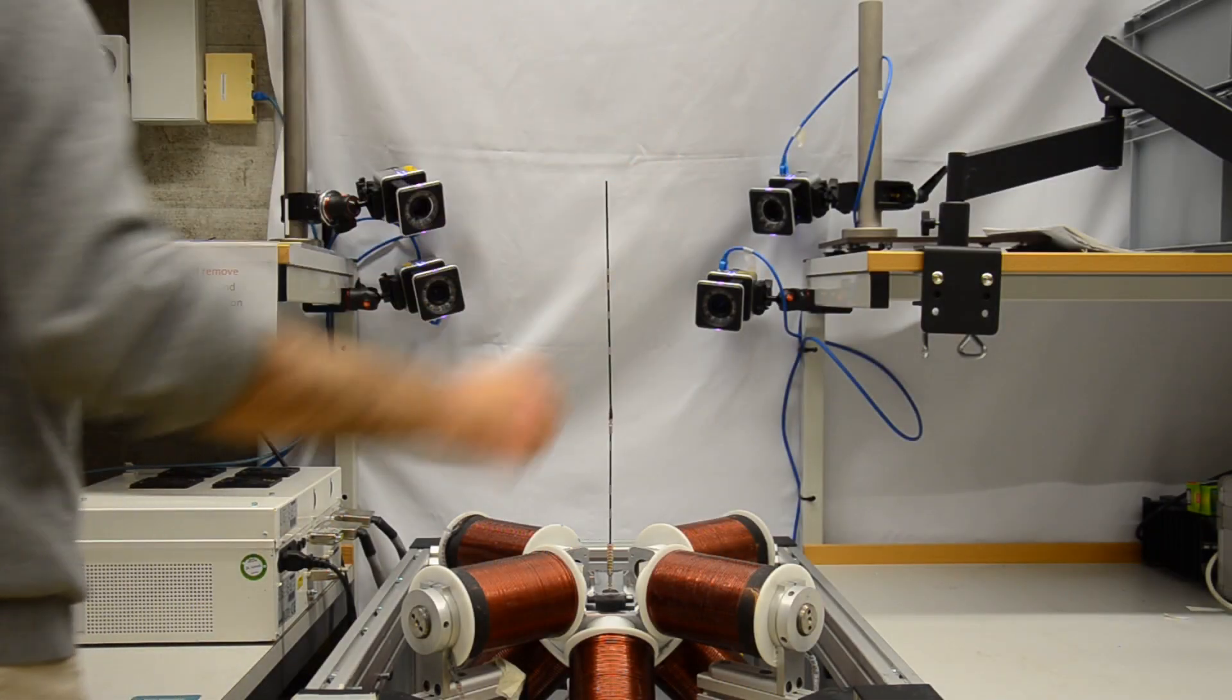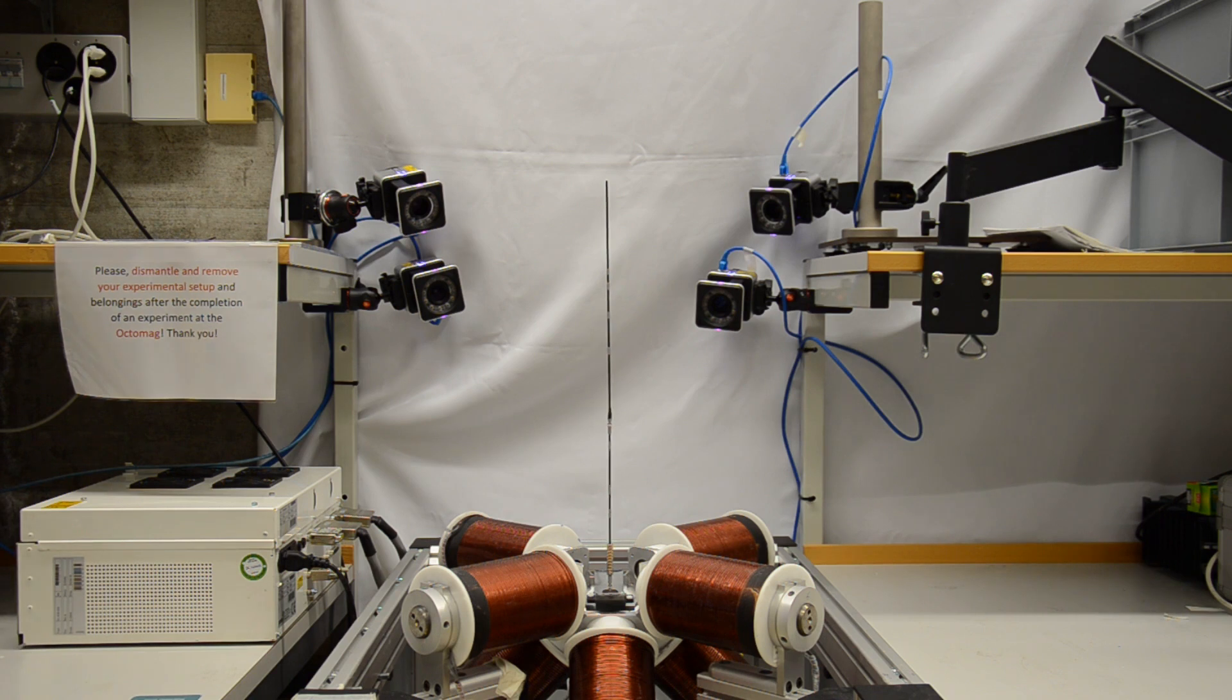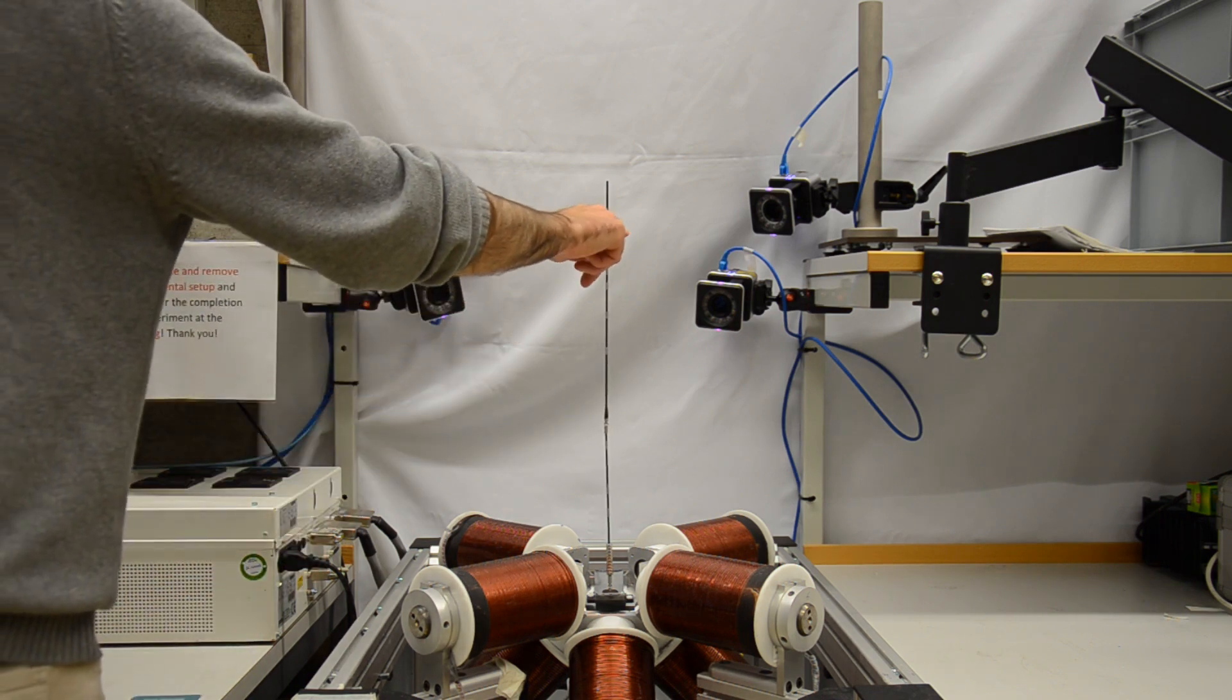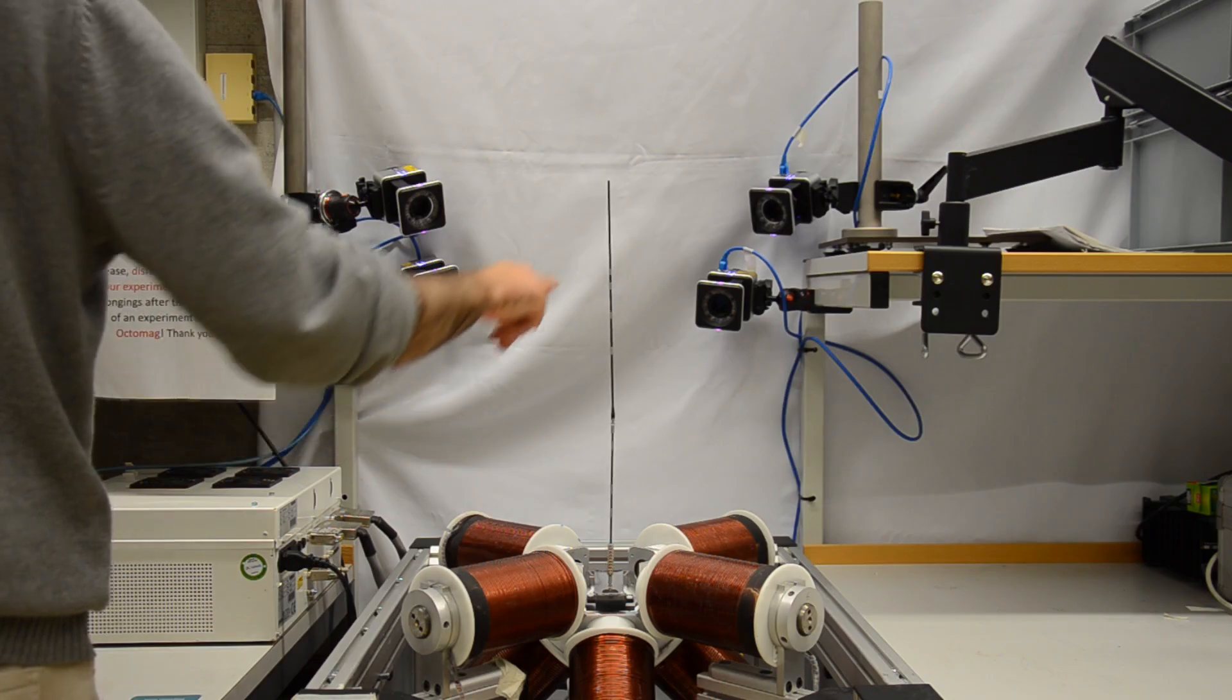As we've shown earlier in this video, the shorter the pendulum, the harder it is to keep it balanced. So let's see how robustly we can balance a 30cm pole.